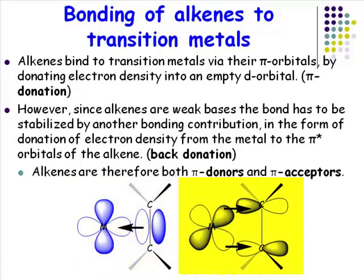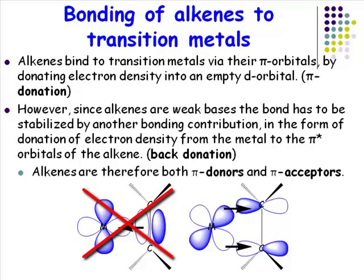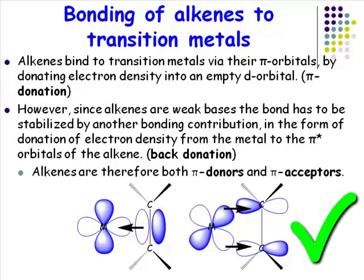There is also an acceptor interaction where electron density flows from the metal into the pi star orbital. The temptation for students is to bond the alkene end on, as with CO, but if the alkene is bonded end on it is not possible to have a donor interaction. The alkene ligand bonds face on because only by bonding face on can you have both an acceptor and a donor interaction.